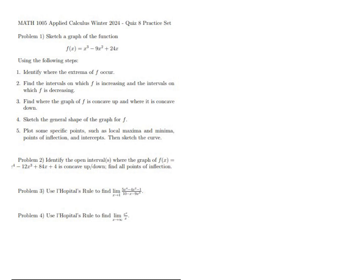What they mean is we're going to start with the derivative of our function, which is 3x² minus 18x plus 24. We're going to set that equal to zero and divide everything by three, because that makes it easier to work with. We can do that because the right-hand side is zero — the three just disappears and we don't need to keep it as a common factor.